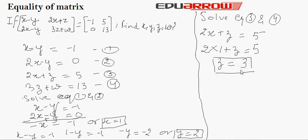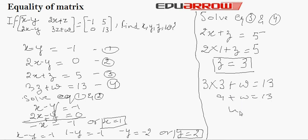Now substituting z equals 3 into equation 4: 3 times 3 plus w equals 13, that is 9 plus w equals 13, so w equals 4. Thus we obtain the values of x, y, z, and w.